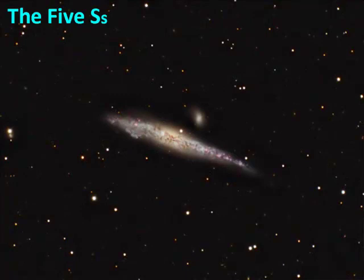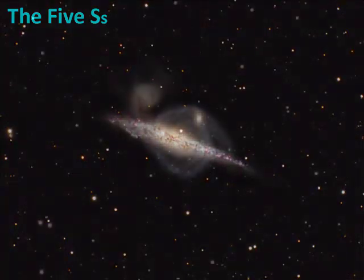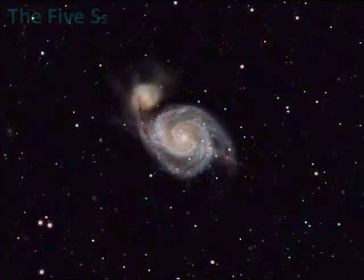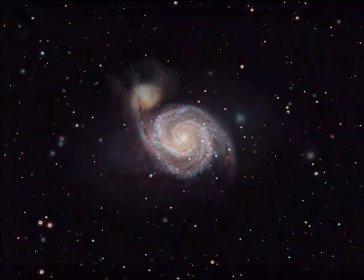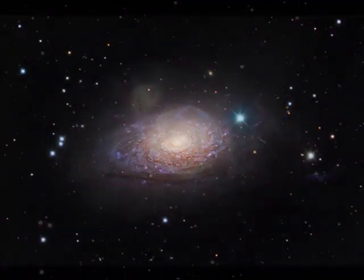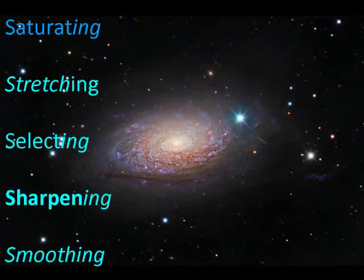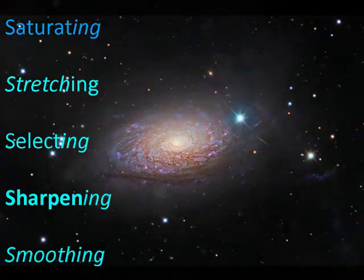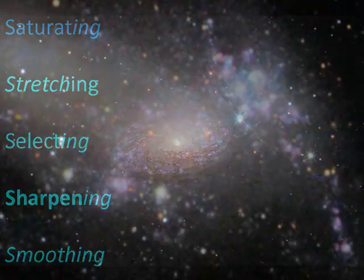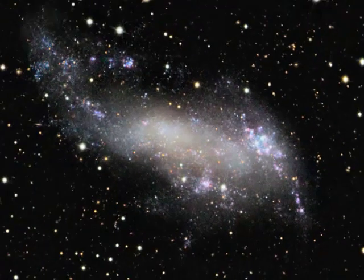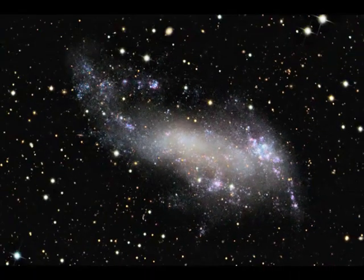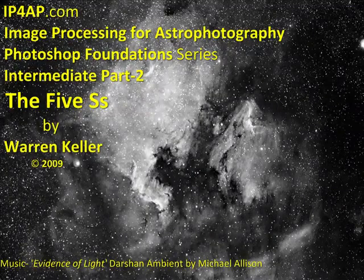I've developed a processing system called the 5 S's. It's the backbone of Intermediate Part 2. The 5 S's are Saturating, Stretching, Selecting, Sharpening, and Smoothing, and they cover most every adjustment we'll make to our data. So let's get cooking with Intermediate Part 2.